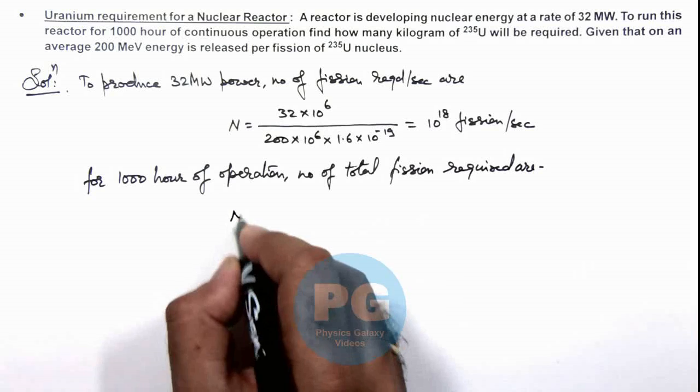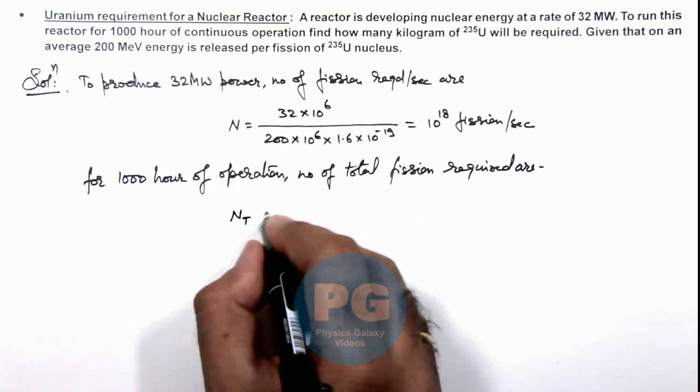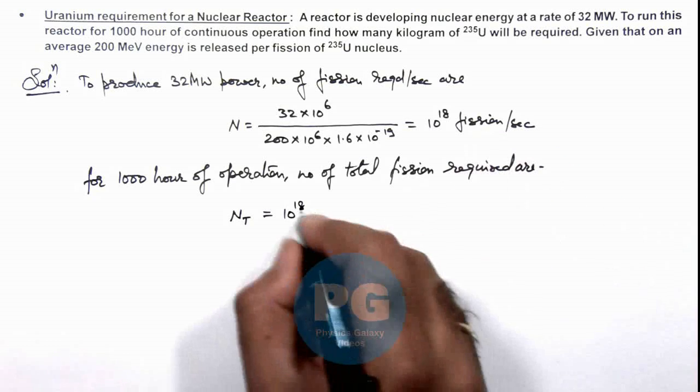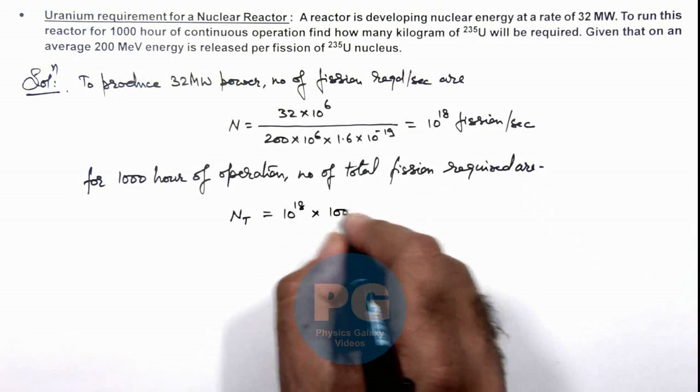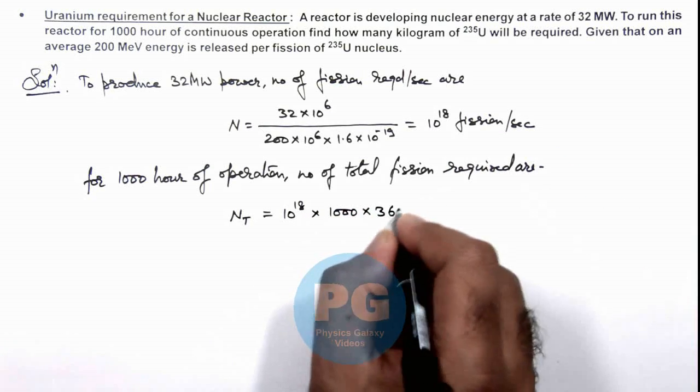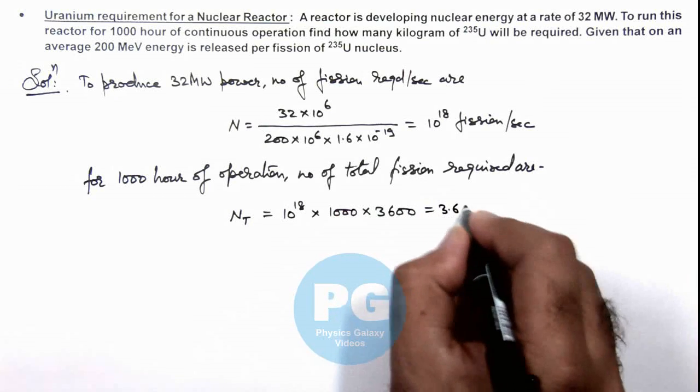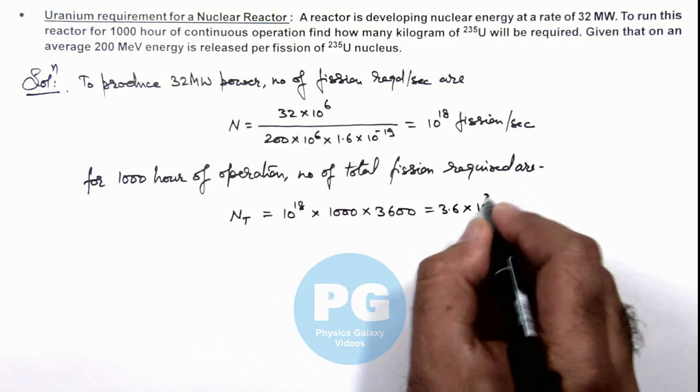Now total number of fission events N_T can be written as 10^18 per second, so we multiply by 1000 multiplied by 3600, which equals 3.6 × 10^24 fissions.